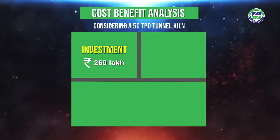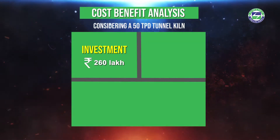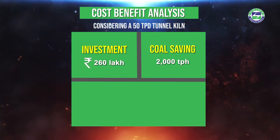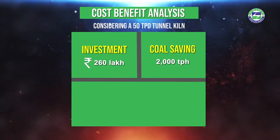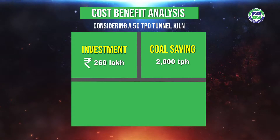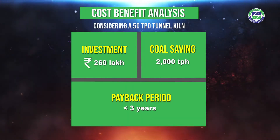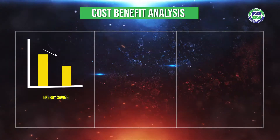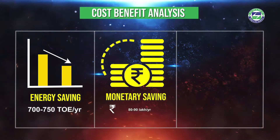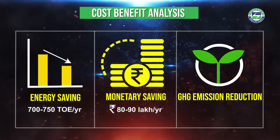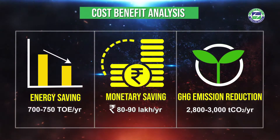The estimated project cost for a 50 TPD tunnel kiln is approximately 260 lakhs. A 50 TPD energy efficient tunnel kiln can lead to savings of 2,000 tons of coal per annum compared to other conventional brick manufacturing processes, and the investment can be recovered in less than three years. The technology can lead to savings of 700 to 750 tons of oil equivalent of energy, implying monetary savings of rupees 80 to 90 lakhs and a GHG emission reduction of 2,800 to 3,000 tons of carbon dioxide emissions per year.